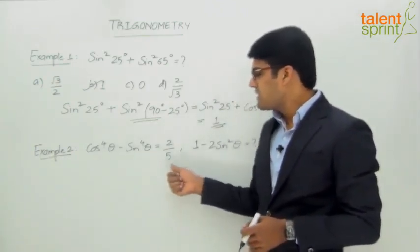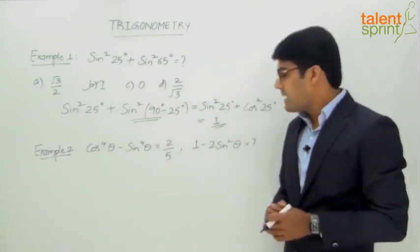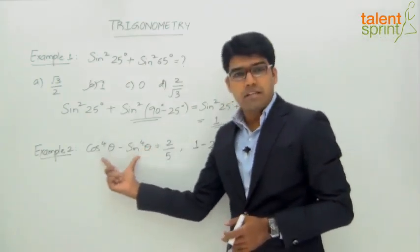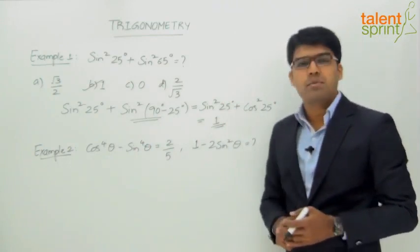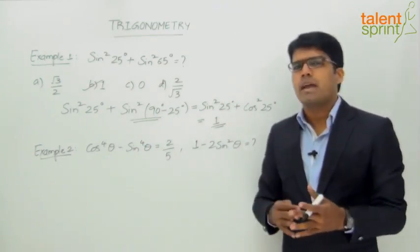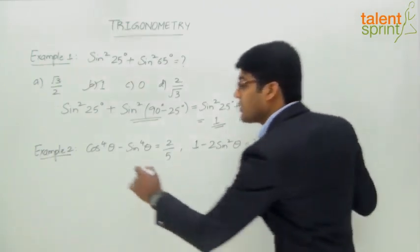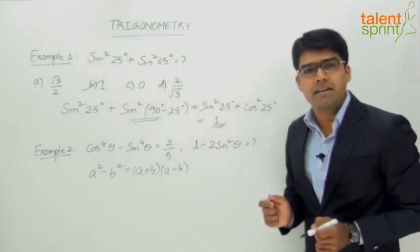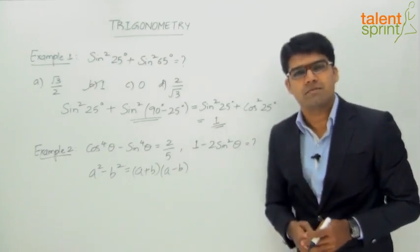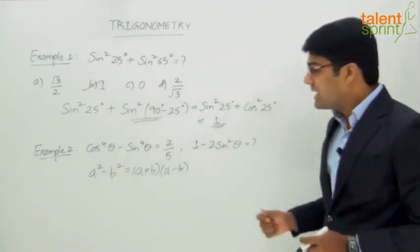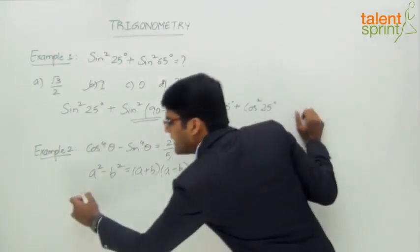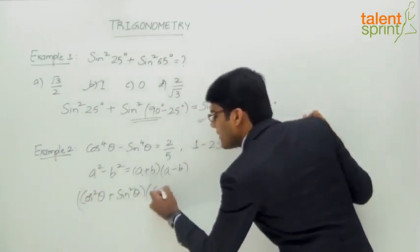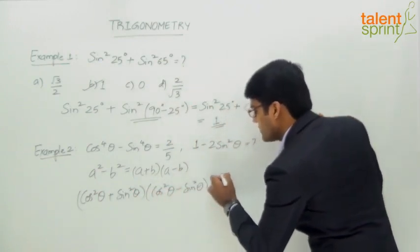So cos⁴θ - sin⁴θ = 2/5, and from this we need to establish what 1 - 2sin²θ is. If you observe the left-hand side, cos⁴θ - sin⁴θ is in the form A² - B². We know that A² - B² = (A + B)(A - B), which is a basic algebraic identity. So let us express it as (cos²θ + sin²θ)(cos²θ - sin²θ) = 2/5.